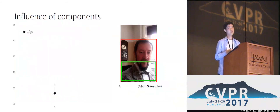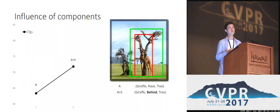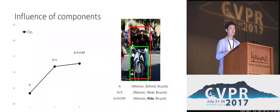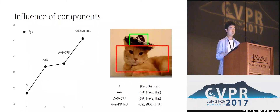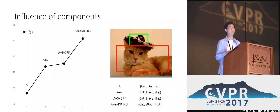In the ablation study, we found that using appearance features only yields a recall of around 16.3. Adding spatial cues raises the recall to 72. Using CRFs to model statistical dependencies further raises the recall to 73. And using DRNet raises the recall to 82, clearly showing the benefit of using DRNet to capture statistical dependencies among components of the triplet.